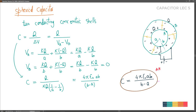Let's talk about the factors on which capacitance depends. If you look at the formula, it is inversely proportional to (B - a) - the gap between the two spherical shells. Imagine one design with a one-meter difference between radii, and another design with only one micrometer difference.